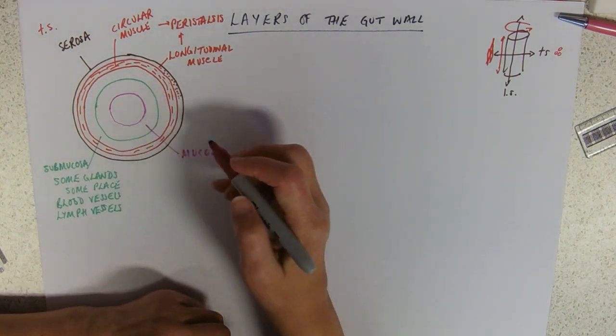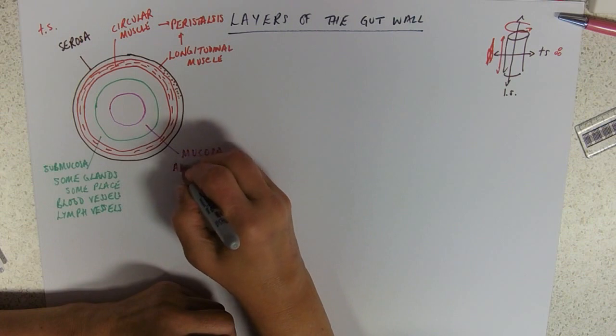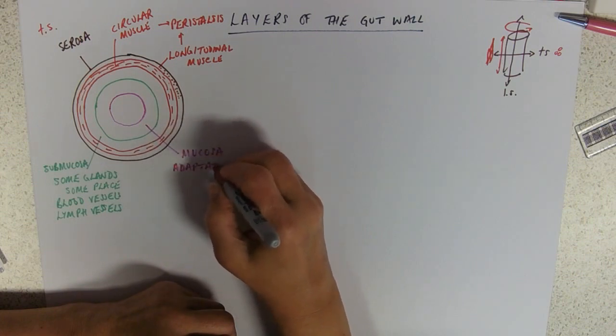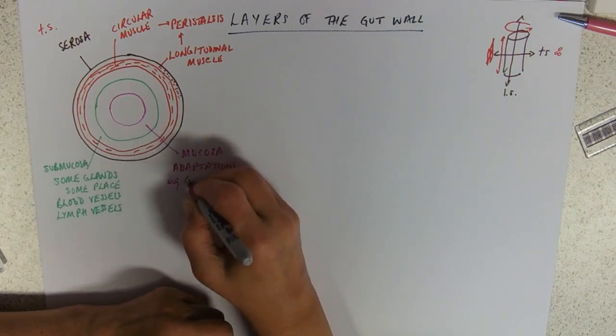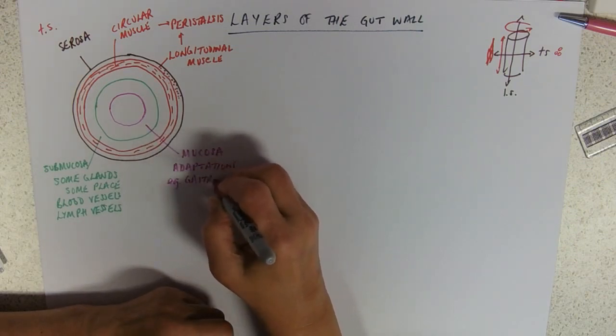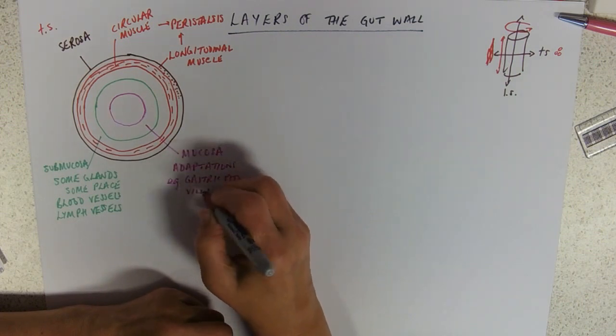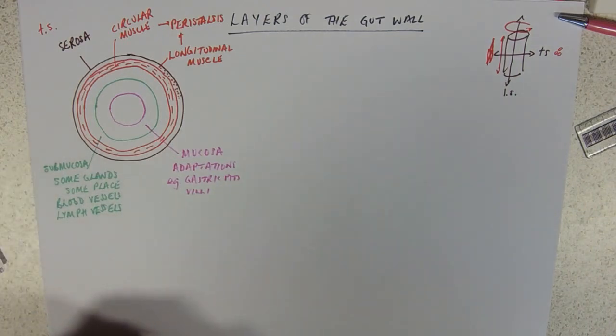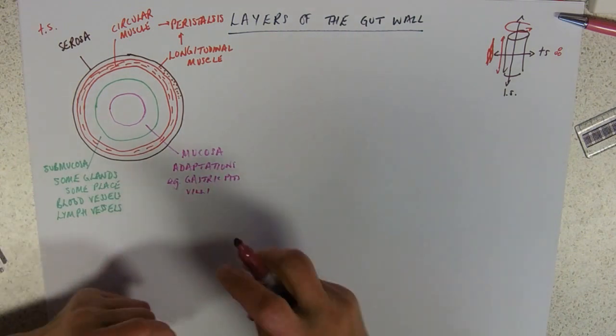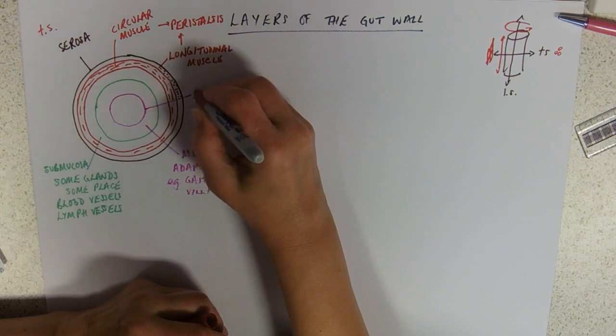This is the bit that has the adaptations, for example gastric pits, and the whole mucosa is lined with epithelial cells.